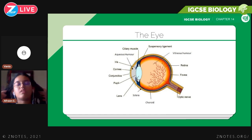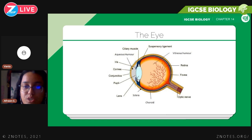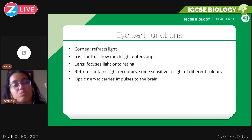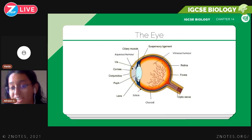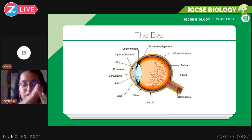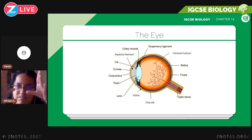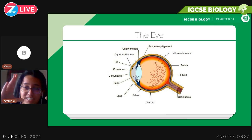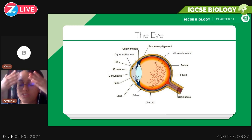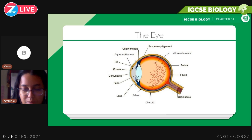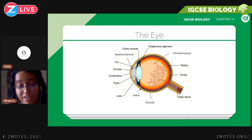This is a side cross-section of the eye — you need to be able to identify these specific parts: the cornea, the iris, the lens, the retina, and the optic nerve. The cornea refracts light — be very careful when saying reflect versus refract in IGCSE Biology. The cornea is the top clear layer, the first layer in your eye, and you need to be able to identify it on diagrams.